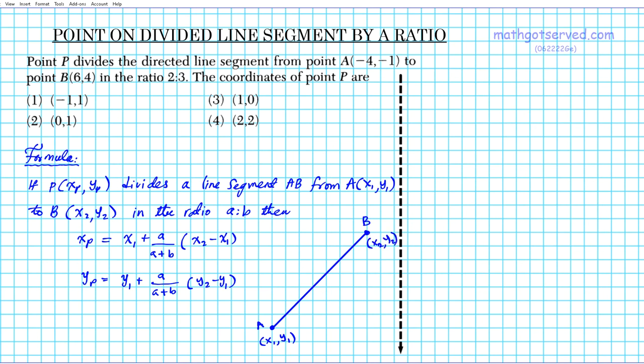So what's happening is this line segment is divided in the ratio A to B. Let's say this right here is the point P that divides the line segment, and then from A to P is A, and then from P to B is B.